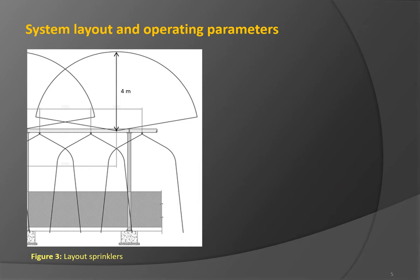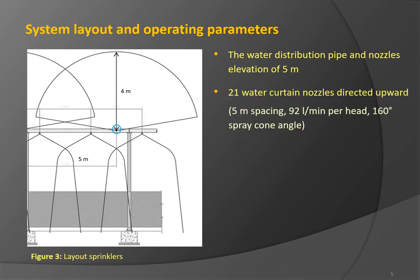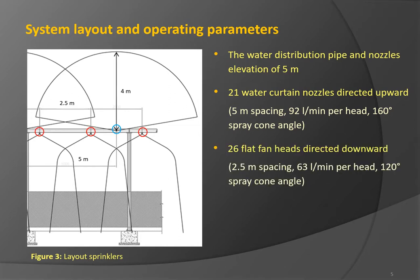The initial tests were conducted for a single water curtain array shown in Figure 3. In the investigated layout, the water distribution pipe and nozzles are at the elevation of 5 meters. 21 water curtain nozzles are directed upward with 5 meters spacing between them. Each head has a nominal flow rate of 92 liters per minute and a spray cone angle of 160 degrees. In addition, 26 flat fan heads are directed downward, with a distance of 2.5 meters between individual heads and a nominal flow rate of 63 liters per minute with a spray cone angle of 120 degrees.